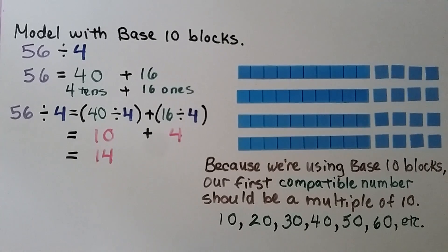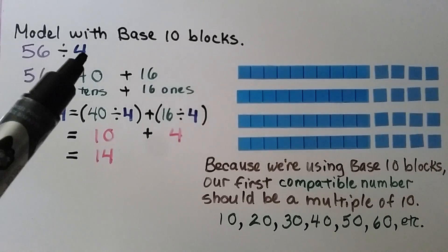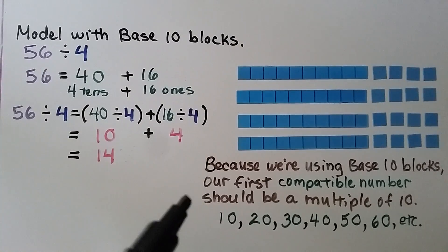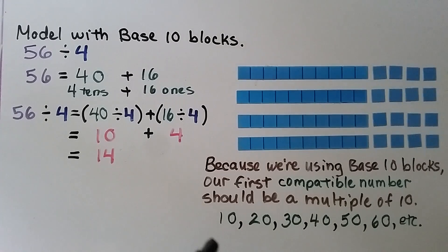And we can model with base 10 blocks. We have 56 divided by 4. And because we're using base 10 blocks, our first compatible number, or at least one of the compatible numbers, should be a multiple of 10. Like 10, 20, 30, 40, 50, 60.